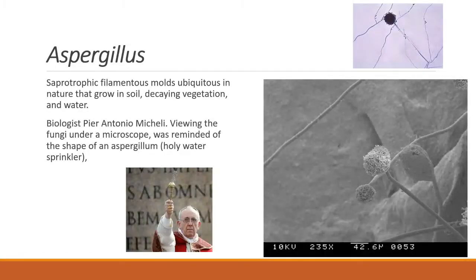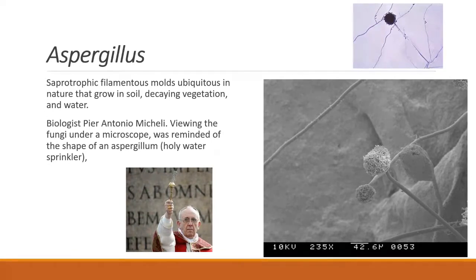Aspergillus is a saprophytic filamentous mold, ubiquitous in nature that grows in soil, mostly in decaying vegetation and water. There are multiple species. Biologist Pierre Antonio McKelley, viewing the fungi under the microscope, was reminded of the shape of an aspergillium, which is a holy water sprinkler. It's an asexual spore-forming structure common to all the aspergillus species, often found in environments of aerobic, high osmotic pressure with high concentration of sugar, salt, et cetera.